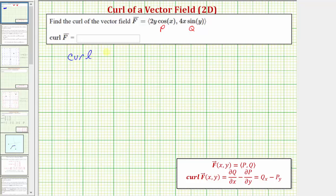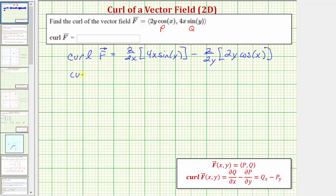The curl of vector field f is equal to the partial derivative of q with respect to x, which is the partial derivative of 4x sine y with respect to x, minus the partial derivative of p with respect to y, which is the partial derivative of 2y cosine x with respect to y. So the curl of the vector field f equals four sine y minus two cosine x.